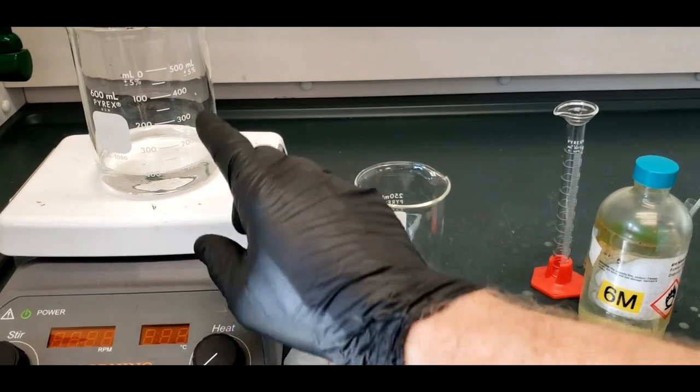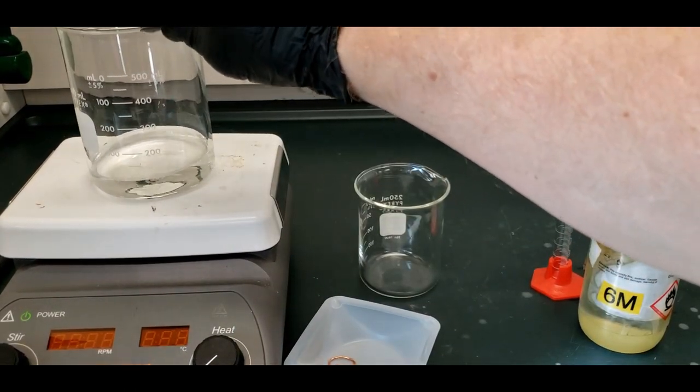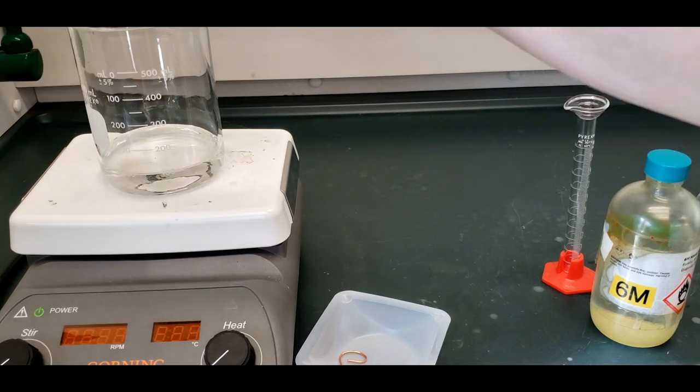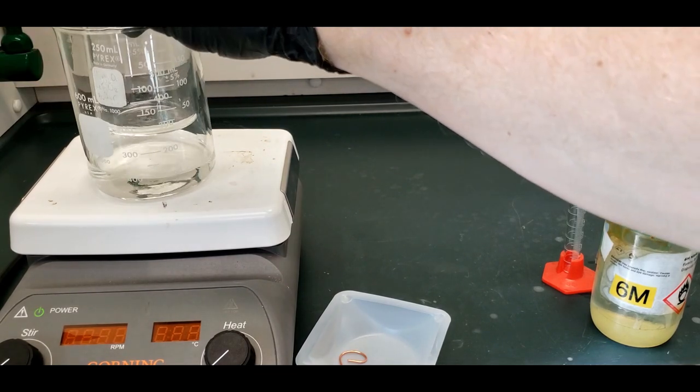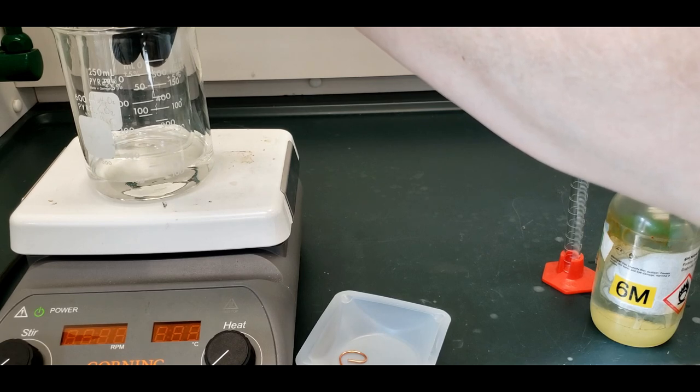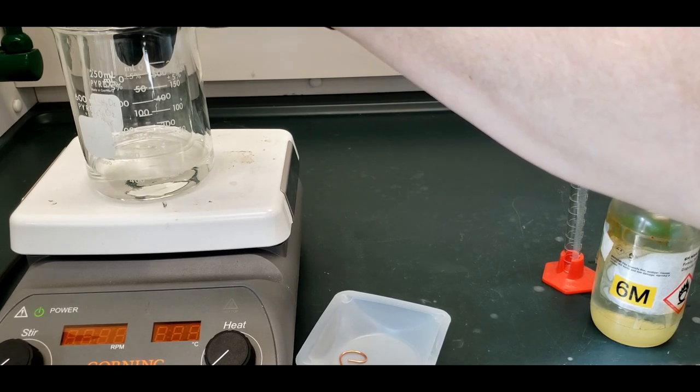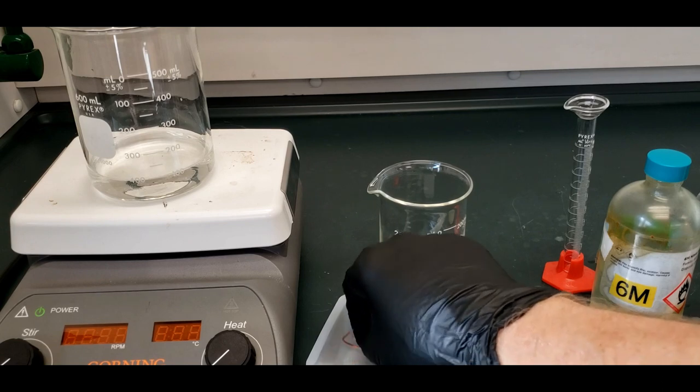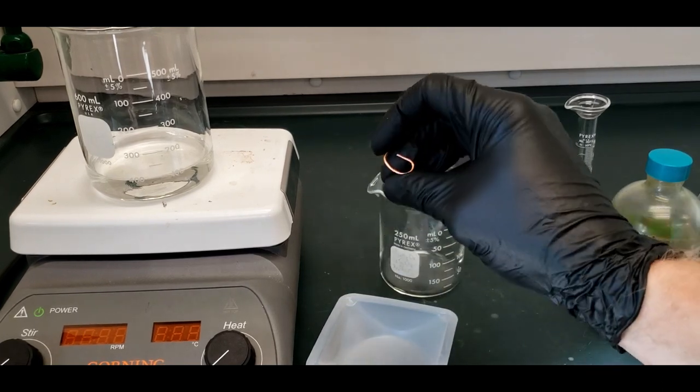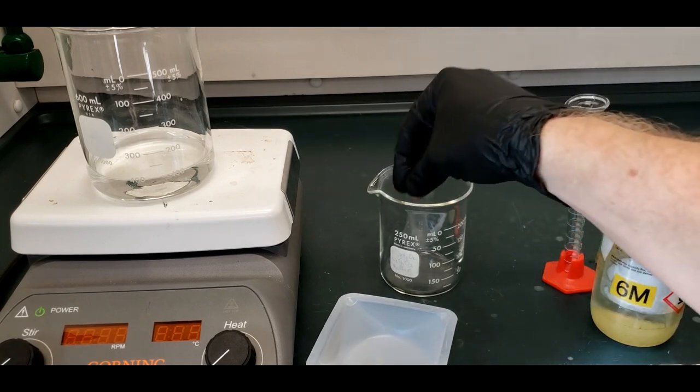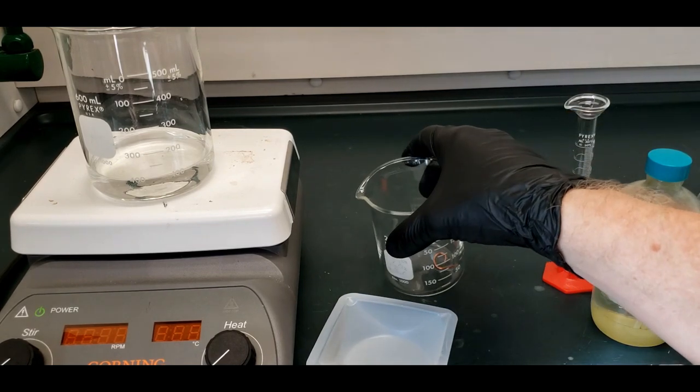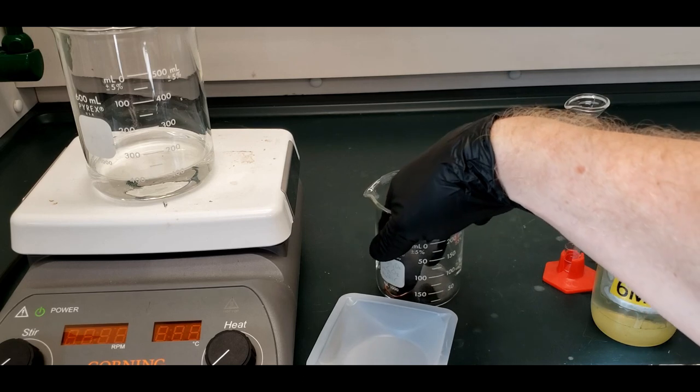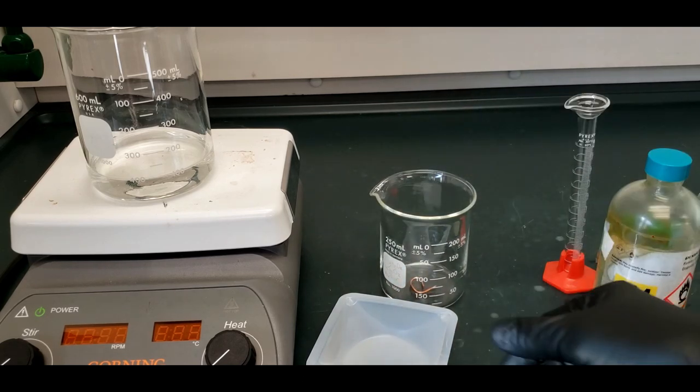We have our hot plate with our beaker of water, 100 mils of water, and a 250 mil beaker we're going to put inside this beaker. The beaker inside only gets so hot, the most it's going to get is 100 degrees Celsius. We don't want the nitric acid evaporating away. I took the wire we just measured the mass of and bent it so there's no chance it's going to get stuck against the walls.